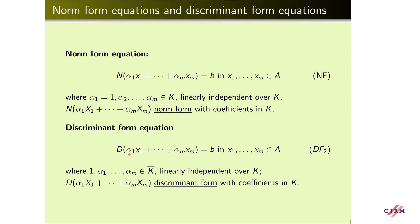A discriminant form equation considers a linear form and takes its discriminant. We assume for simplicity that 1, alpha₁,...,alpha_n are linearly independent elements from K-bar, in which case this is called a discriminant form with coefficients in K.